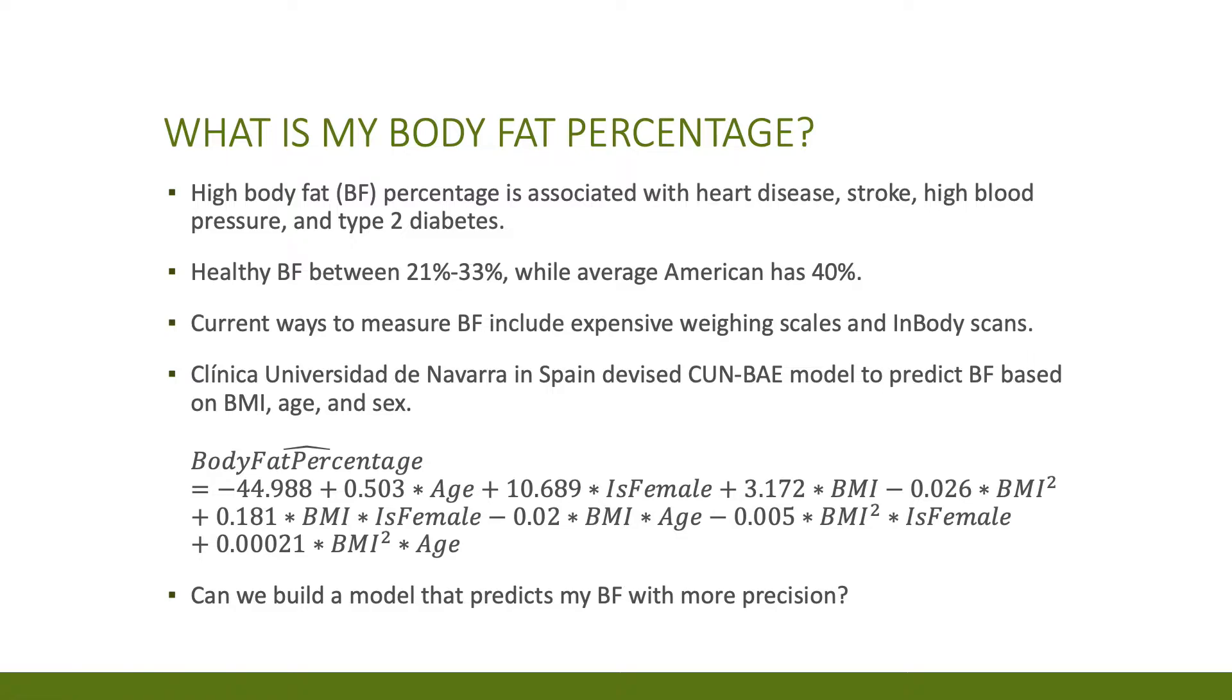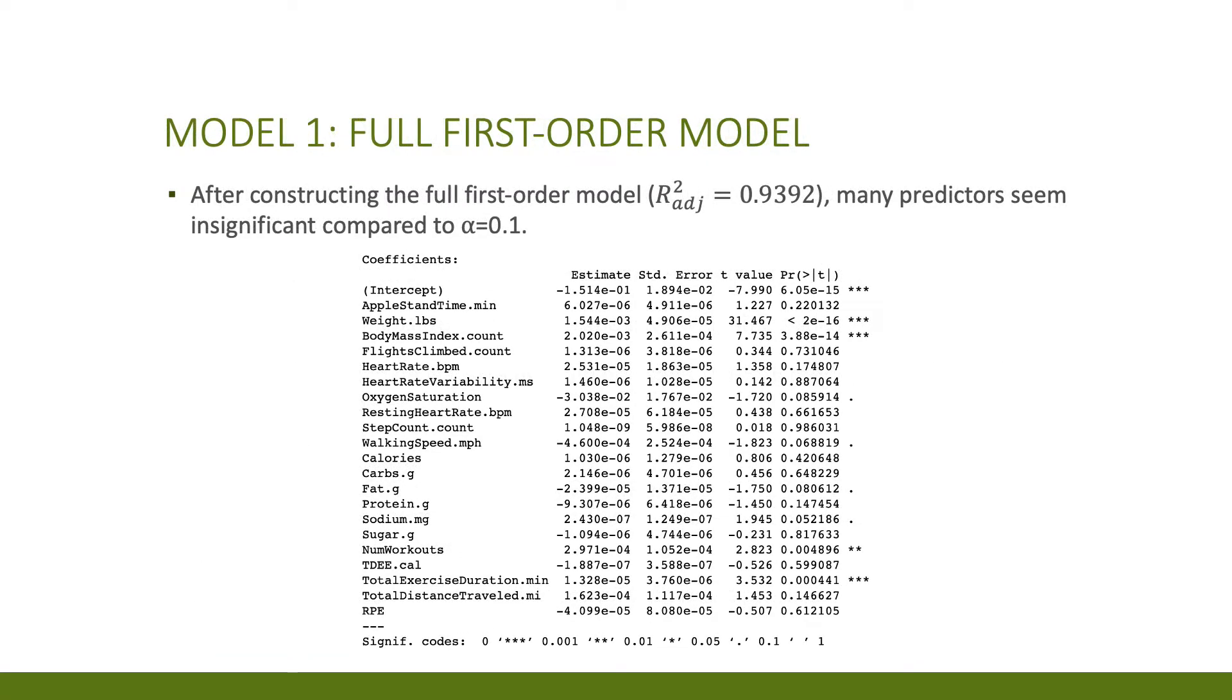I began by constructing a full first-order model. Right off the bat I saw that many predictors seem insignificant with low p-values compared to alpha equals 0.1. This original model however does explain around 94 percent of the variation in body fat, which is quite high.